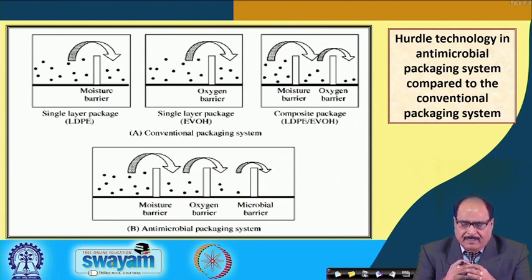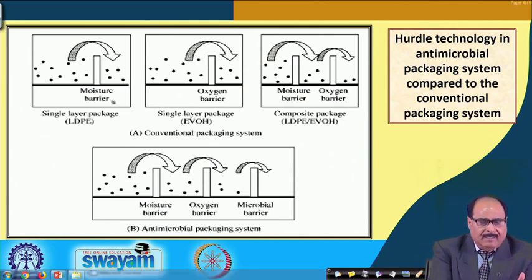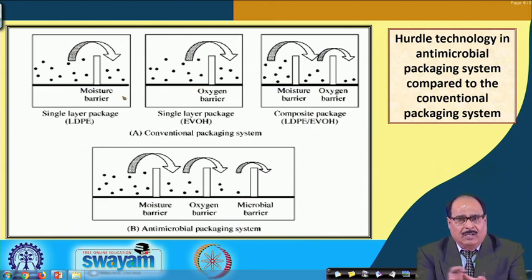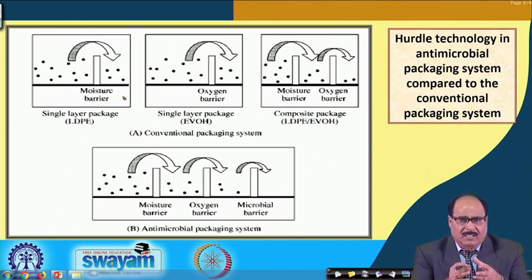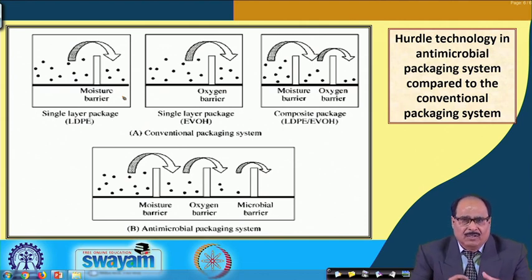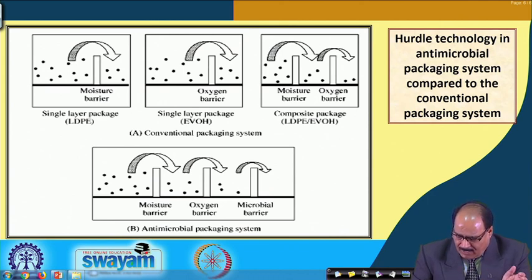The same concept applies in packaging — hurdle technology in the packaging antimicrobial system development. In the top portion of this figure, when we apply any packaging material, it may be impermeable to moisture or may provide an oxygen barrier, or co-extruded laminates may provide both moisture and oxygen barrier. But the hurdle technology concept facilitates that along with having both moisture and oxygen barrier, one can also incorporate antimicrobial coatings or antimicrobial compounds mixed with the packaging material. So in addition to providing oxygen and moisture barrier, this packaging material also provides additional barriers, ultimately giving the product better quality and longer shelf life.